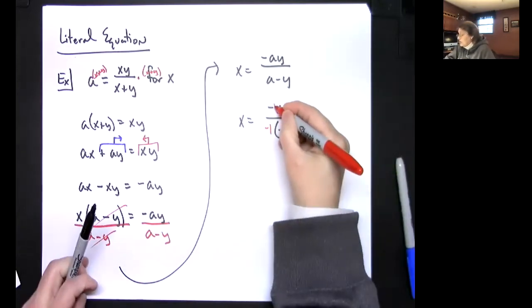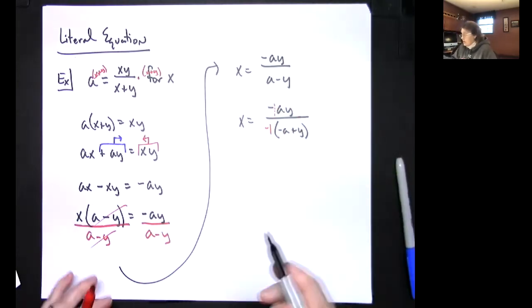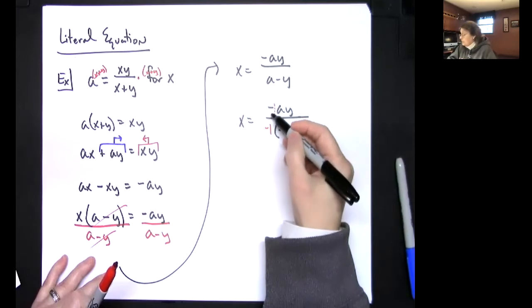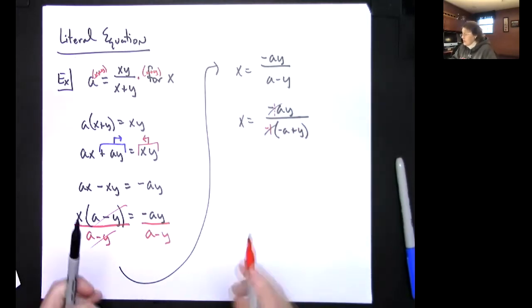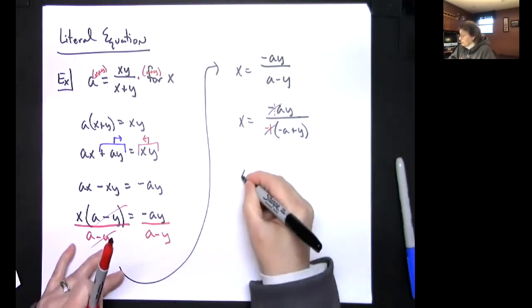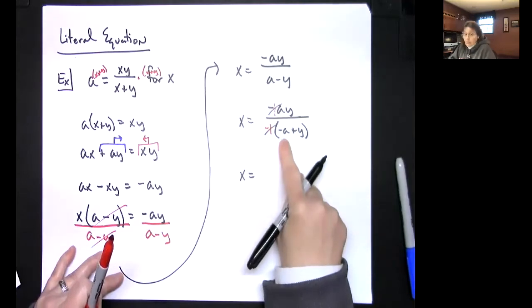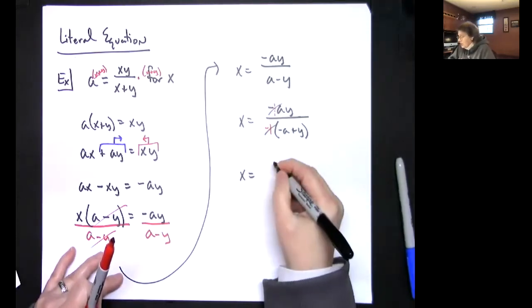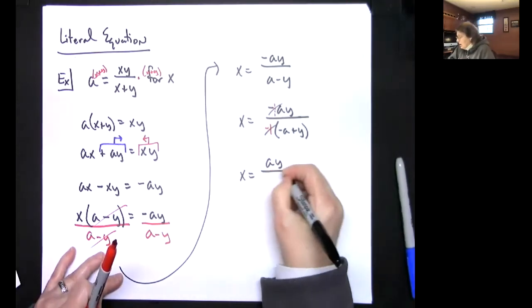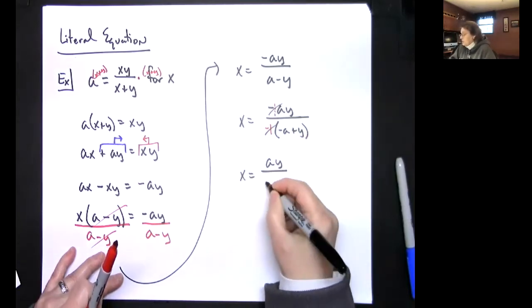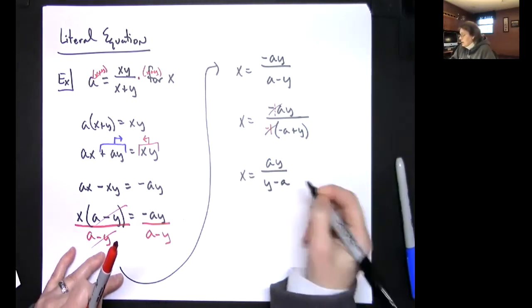I have an imaginary negative one in the top, so then I can cross them out. That kind of cleans it up. Now I don't want to write on the bottom negative a plus y, so I'm going to leave ay on the top, and I'm going to reverse those and go y minus a.